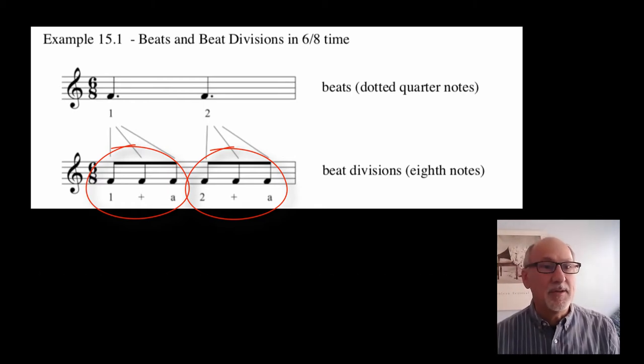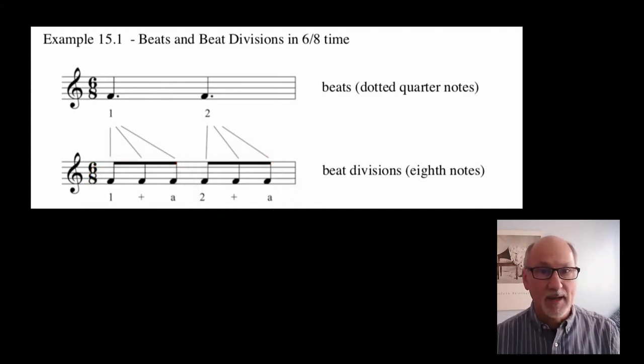The standard counting method for these beat divisions are 1 and a, 2 and a, as shown here.